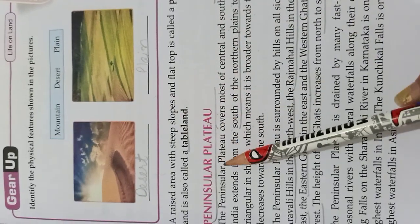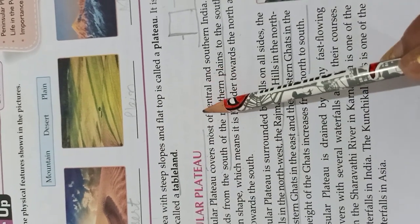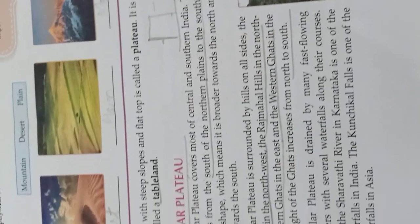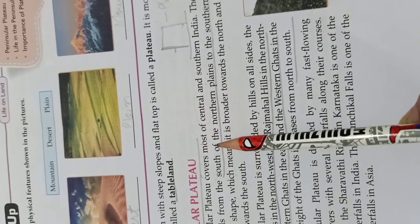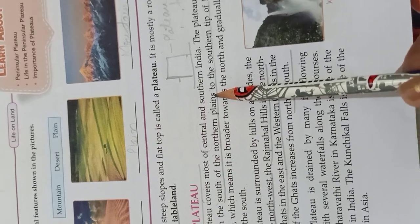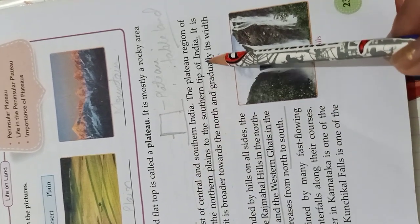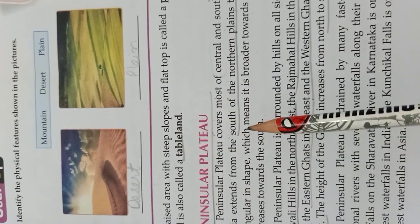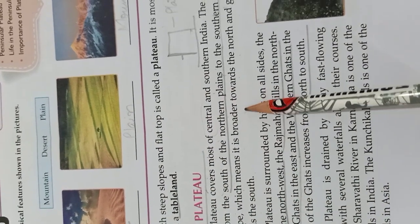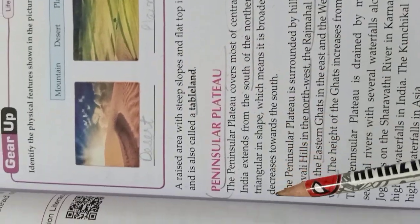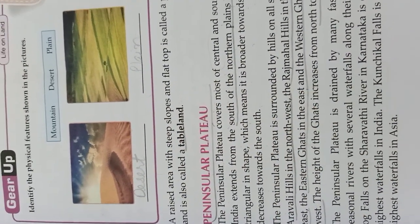The plateau region of India extends from the south of the northern plains to the southern tip of India. It is triangular in shape, which means it is broader towards the north and gradually its width decreases towards the south.